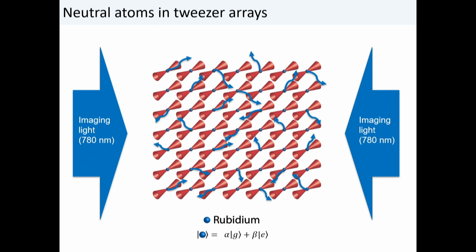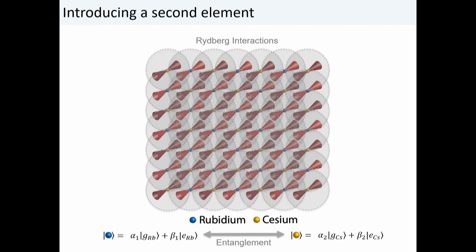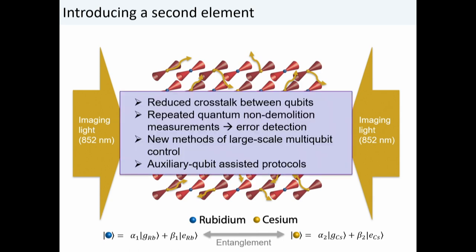Our approach is to introduce another element into the array with vastly different atomic resonances — for example, cesium. When it's time to get information, we use Rydberg interactions to generate correlations between the rubidium and cesium atoms. Then instead of fluorescing the rubidium atoms, we fluoresce the cesium atoms. Because the cesium line is about 70 nm away from the rubidium line, the cesium photons don't affect the rubidium atoms, which remain coherent. This straightforward idea has important applications: reducing crosstalk, enabling non-demolition measurements for error detection and correction, enabling large-scale multi-qubit control, and auxiliary qubit-assisted protocols.